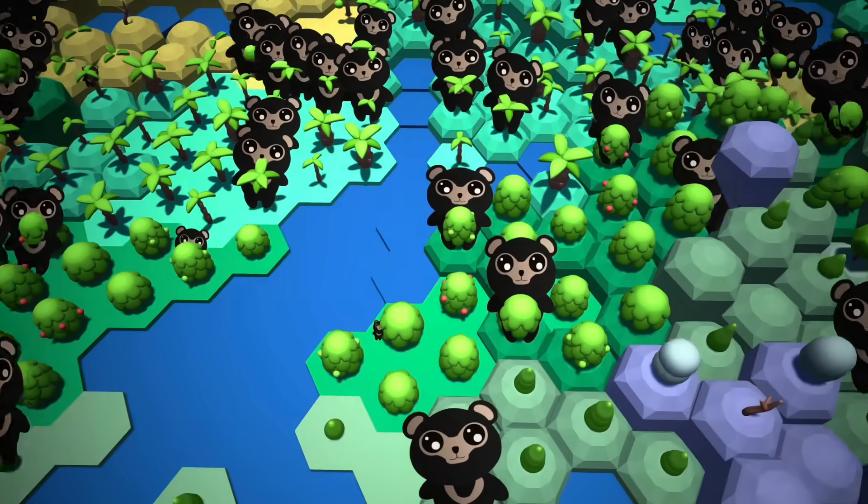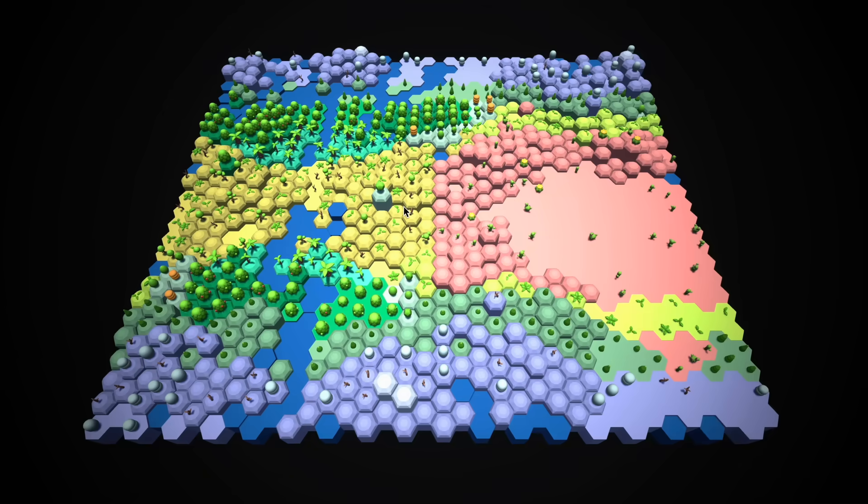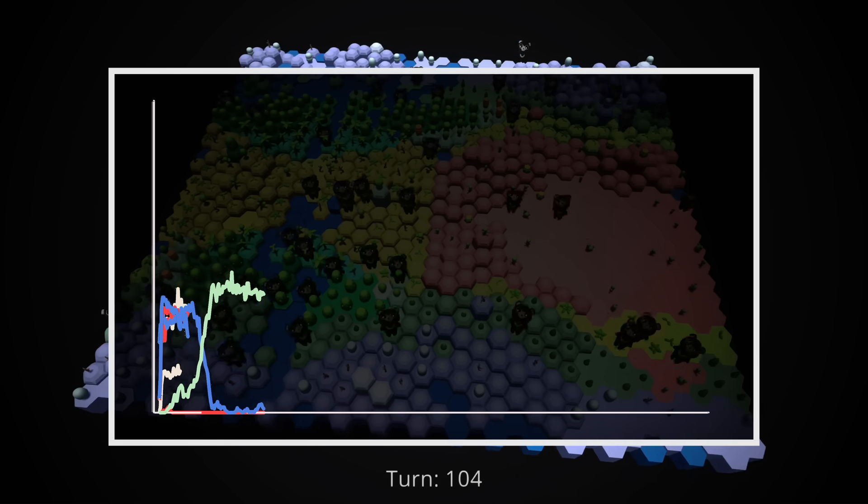Creatures will consume everything they need from the tile they currently occupy. If that tile runs out, they'll look at adjacent tiles, pick one, and move on. Finally, this is an evolution simulator, so of course we have mutations.